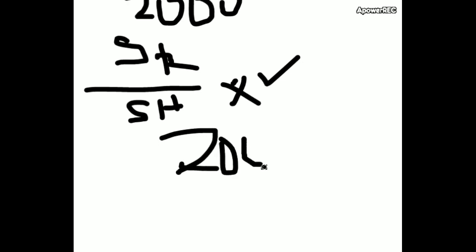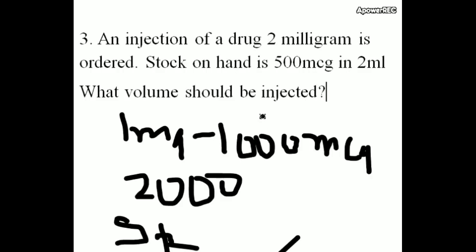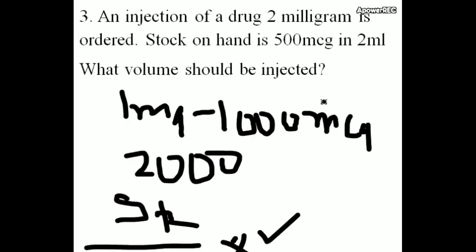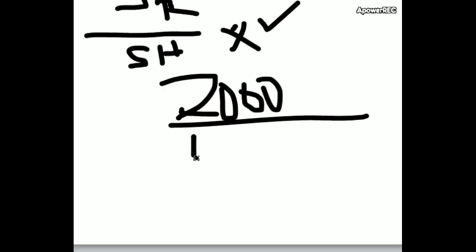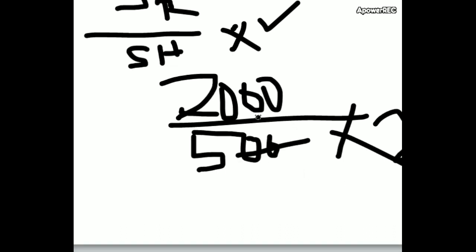2000 microgram by stock on hand is 500 microgram. 500 microgram into 2. 2 is the volume. Here two zeros gone.